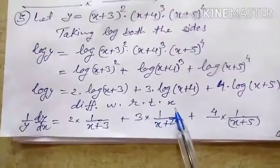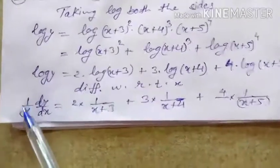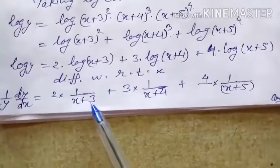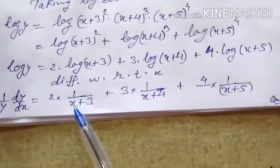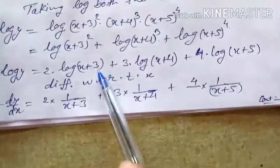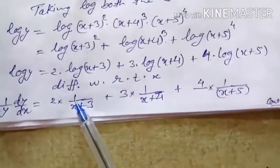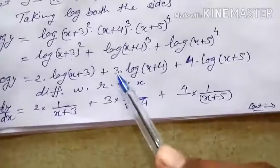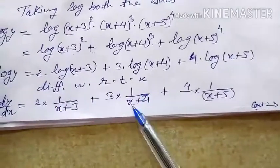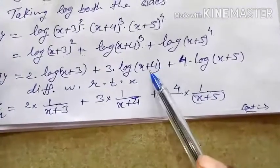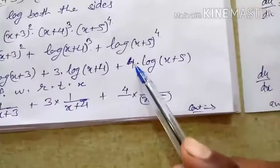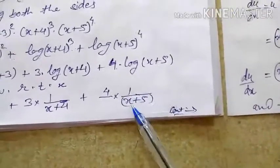Differentiating with respect to x: (1/y)·dy/dx = 2 · (1/(x+3)) + 3 · (1/(x+4)) + 4 · (1/(x+5)). The differential of log(x+3) is 1/(x+3) since by chain rule the differential of (x+3) is just 1, and similarly for the other terms.